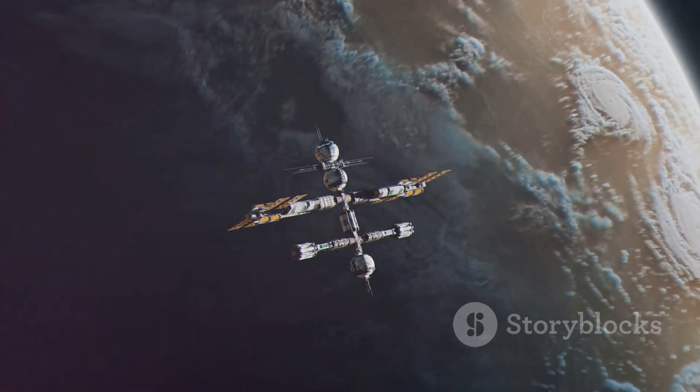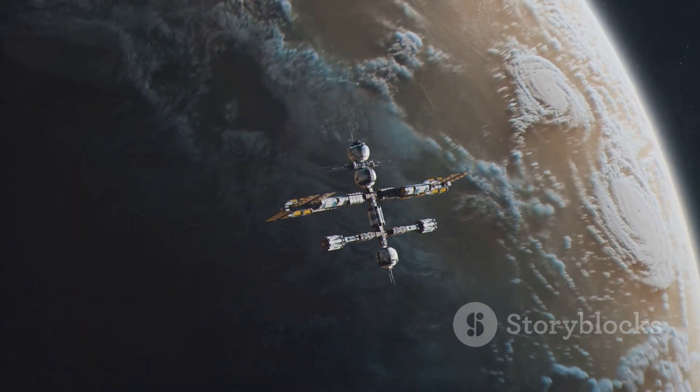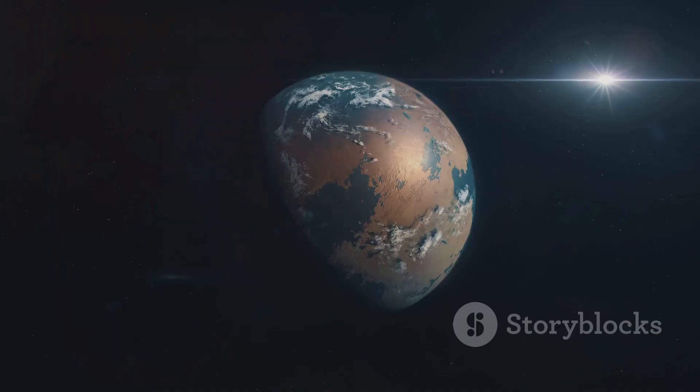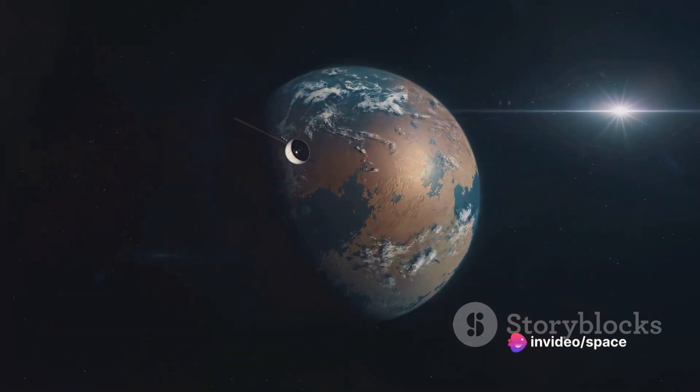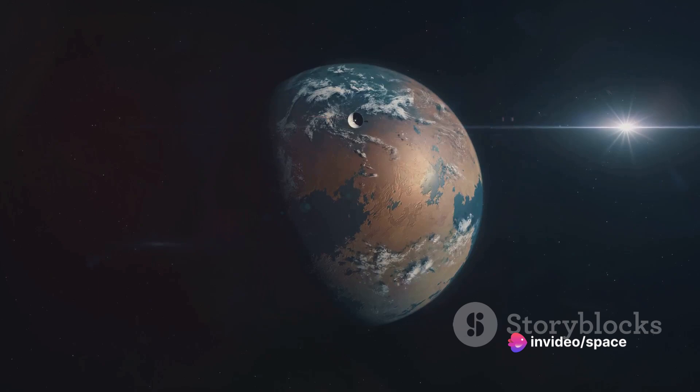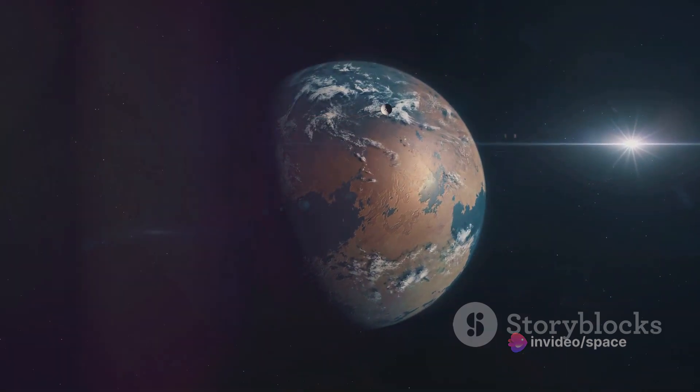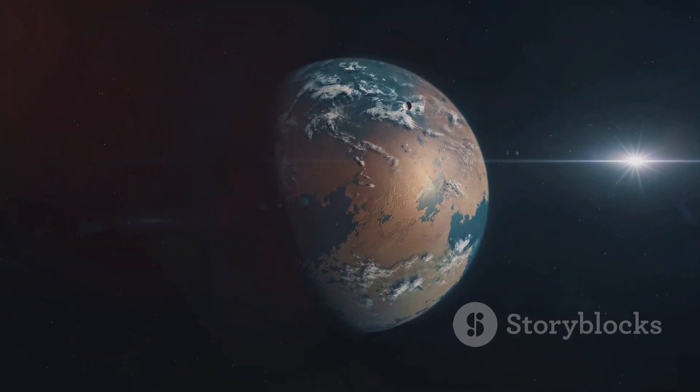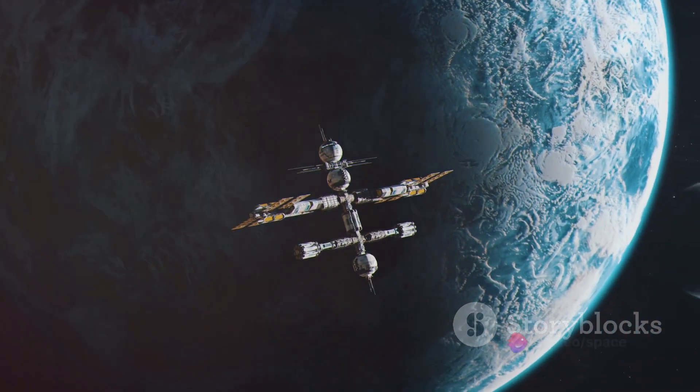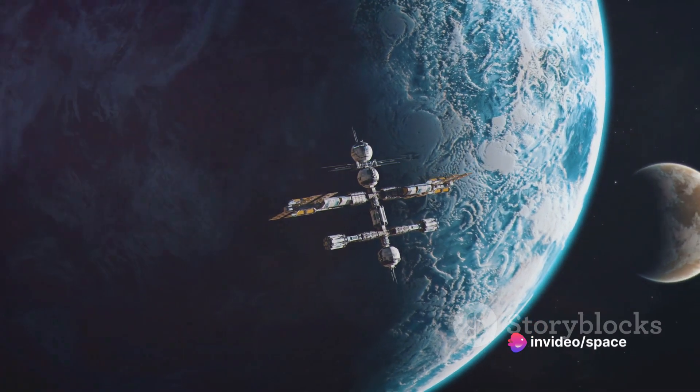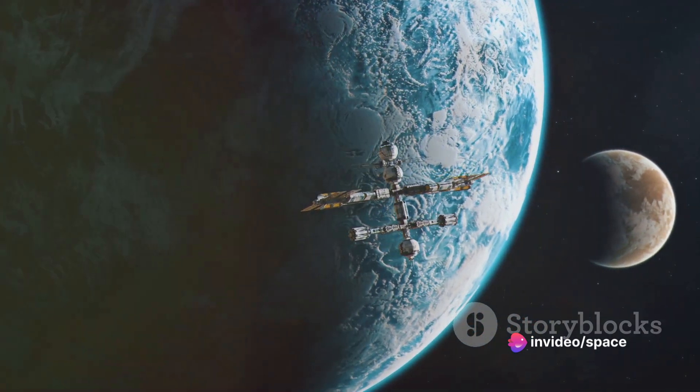Kepler-22b was one of the first exoplanets discovered by this mission, and it quickly became a symbol of hope and possibility. Its size is intriguing, but it's the potential for liquid water on its surface, due to its location in the habitable zone, that really gets the heart racing. Could there be life on Kepler-22b? We don't know yet, but the fact that we can even ask that question is a testament to how far we've come in our understanding of the universe.